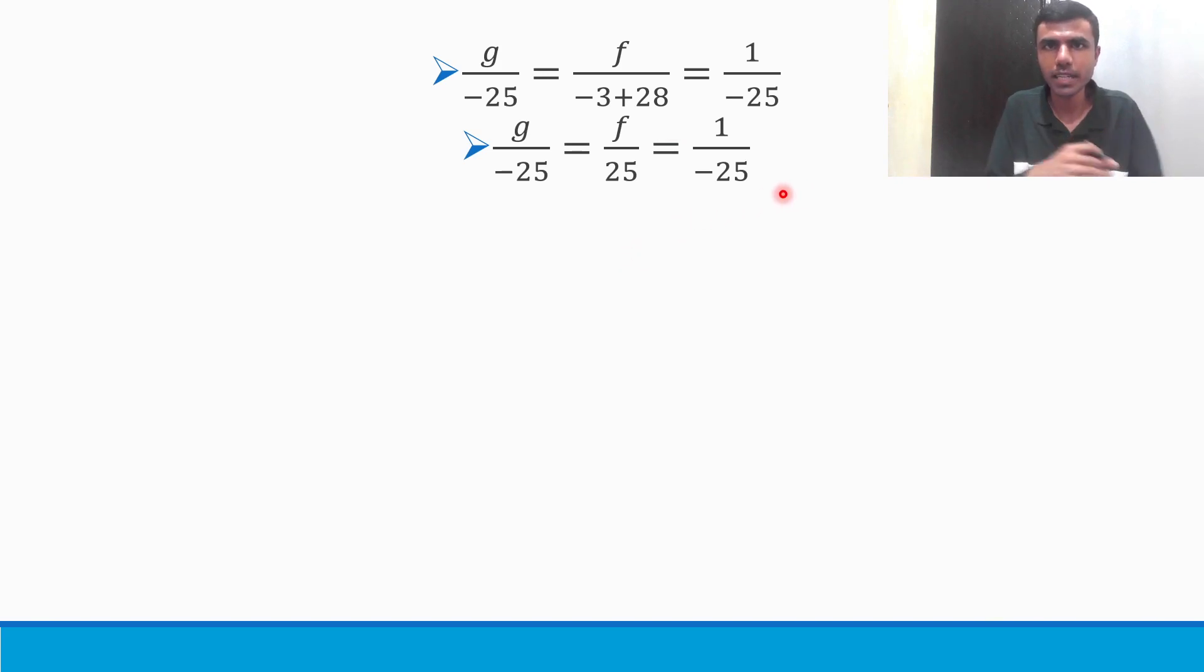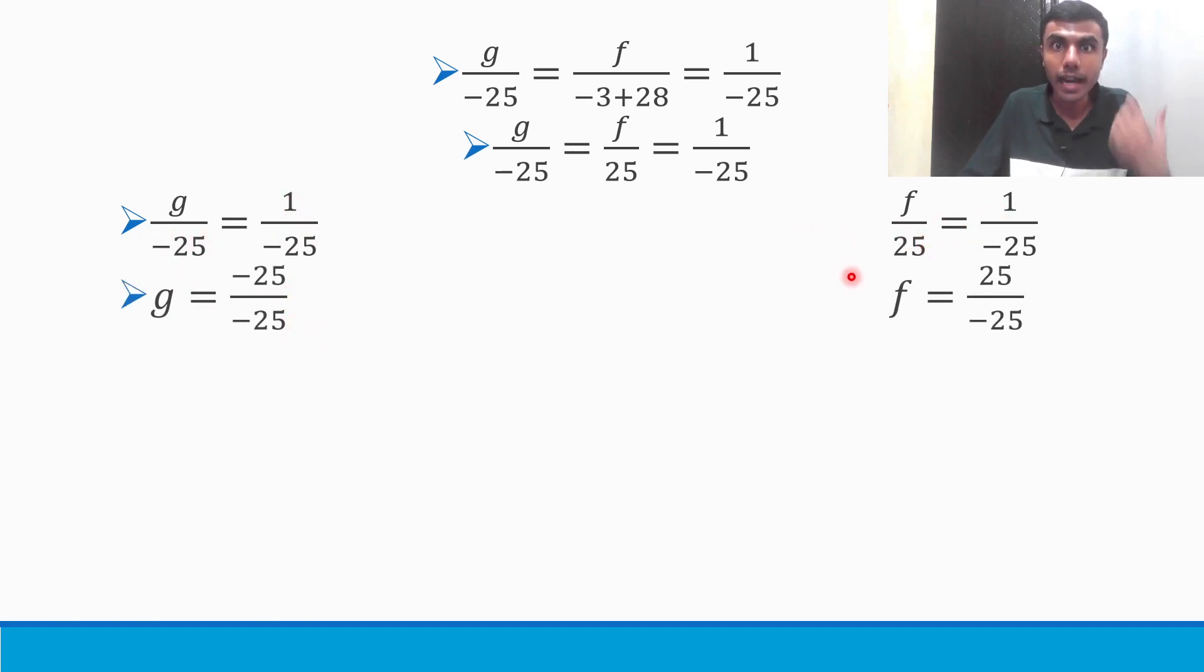Now let's do like this. Let me take one at a time. g by -25 = 1 by -25 and f by 25 = 1 by -25. Because I need g and f. Now send this -25 here and here also send this 25 here. So g will be -25/-25 and f will be 25/-25. So g will be +1, cancel 1, f will be -1. All good. Let's keep going.